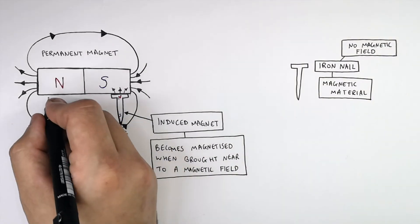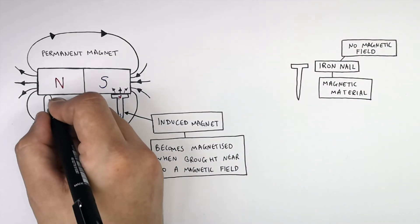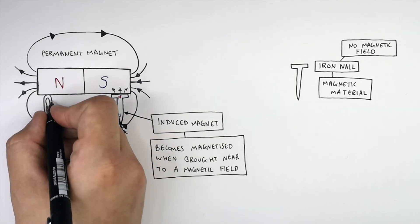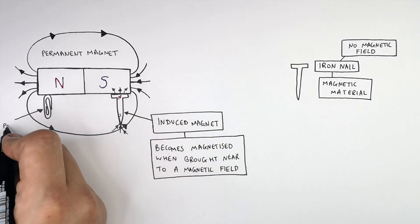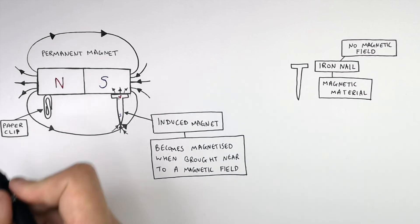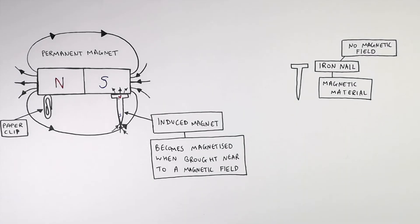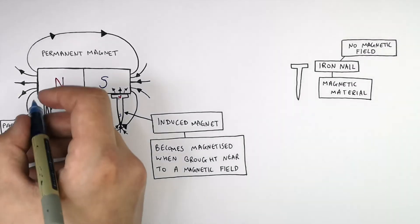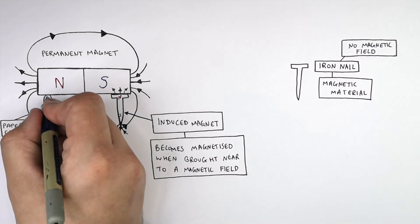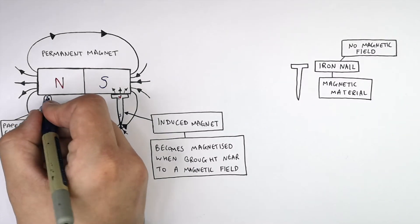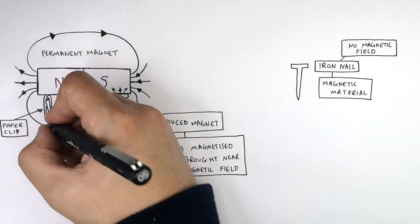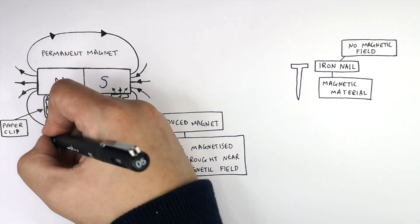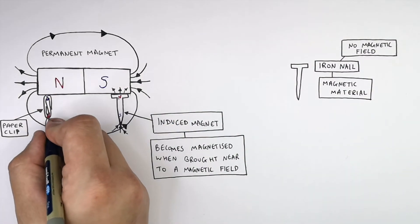I've got some paper clips here that contain some iron. The paper clips are going to become magnets — they're now induced magnets. The magnetic field at the top of this paper clip will be a South Pole, as it is attracted to the North Pole of the permanent magnet. And the North Pole of the paper clip will then attract the South Pole of another induced magnet.